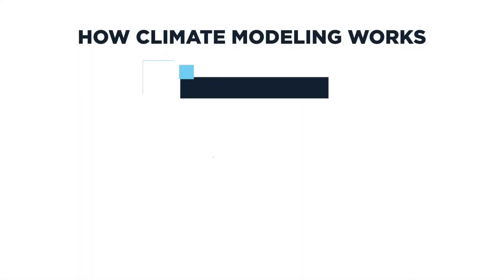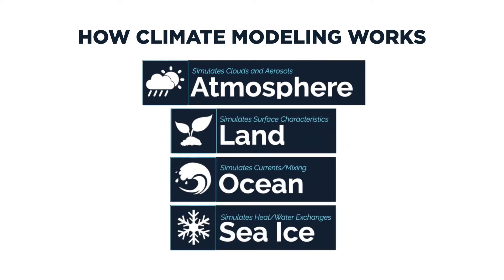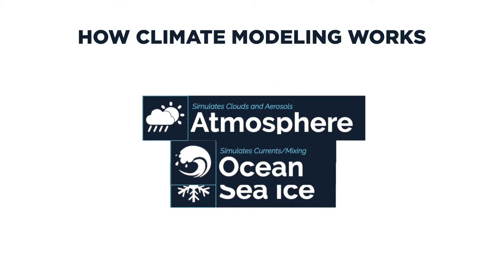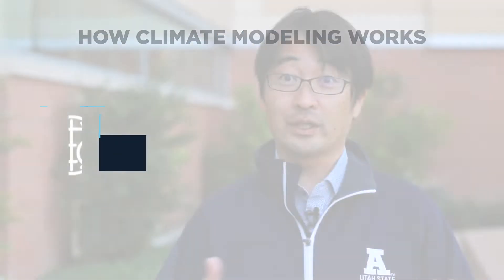In terms of climate modeling, we usually have four components: atmosphere, ocean, land, and sea ice. Each component has individual models, and we try to merge them so all components work together. It takes almost one year to finish the entire model experiments and analyze the results.